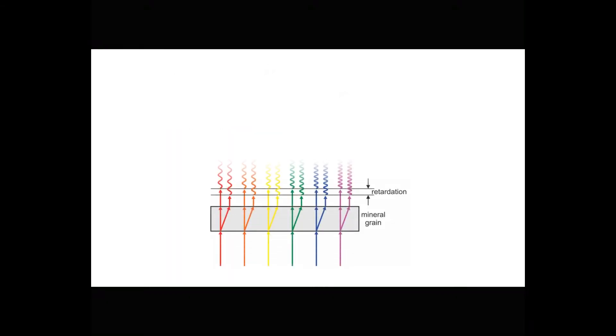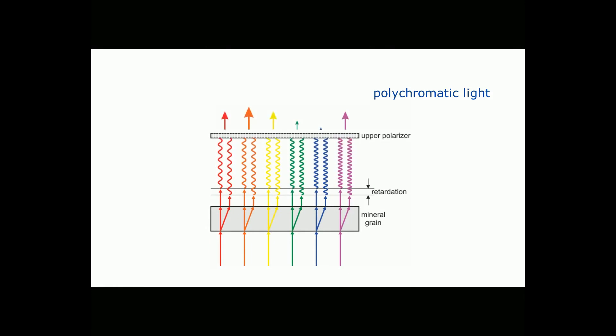This same phenomenon occurs for waves of all wavelengths. The drawing here shows the standard red, orange, yellow, green, blue, violet colors. But of course, there are many, many other colors. And they're all traveling the same direction. Above the upper polarizer, some of these colors will be in phase and some will not. So some will add and become enhanced and others will become diminished.